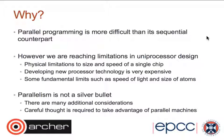Why can't we just use single processors? We've basically reached the limitation for how fast a single processor can go — they can't get any faster. If we try to miniaturize them further, we're hitting the physical limitations of, for example, the speed of light. And even if we could miniaturize them further, they would generate too much heat, and this technology is very expensive. We're already looking at a few tens of atoms in terms of the size of these single-core processors. So uniprocessor design has reached its limitation. Therefore, rather than trying to make one processor much faster, why don't we look at using lots of processors?